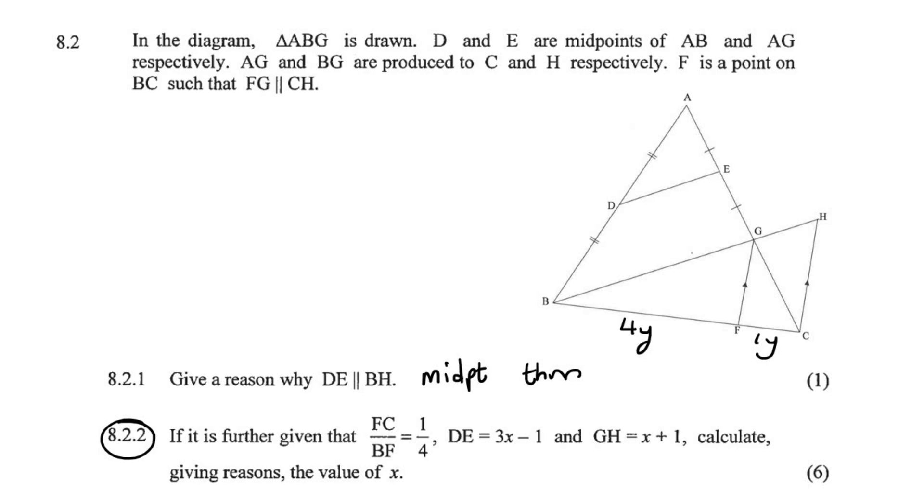They then tell us that DE is 3X minus 1, and GH is X plus 1. Okay, so we are going to have to use the midpoint theorem property that I spoke about now, and so they say calculate the value of X.